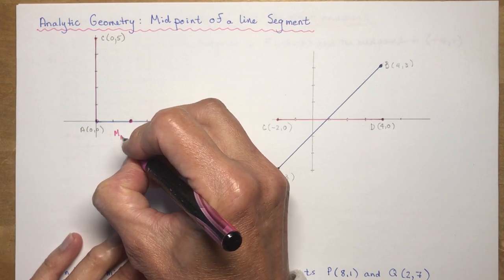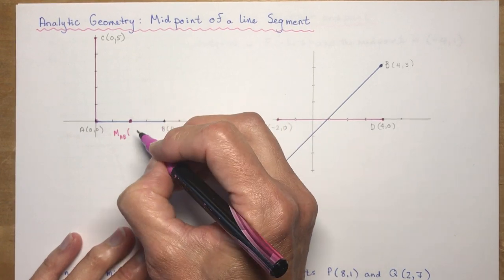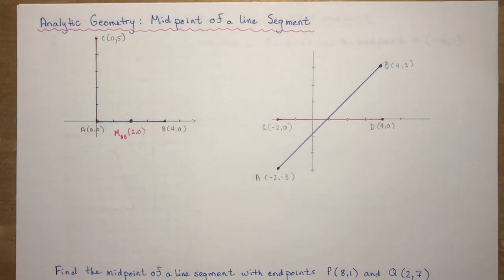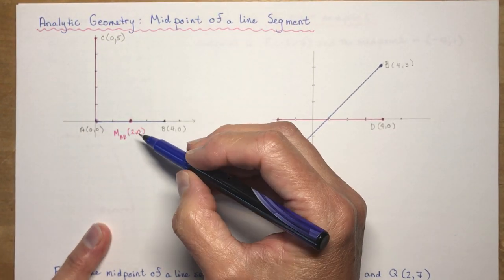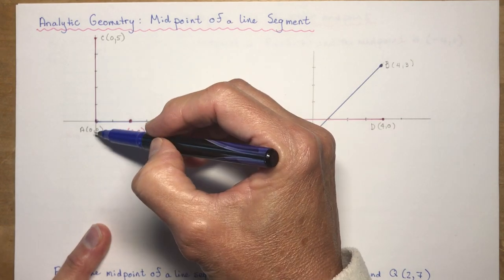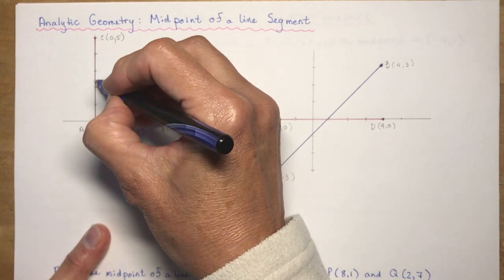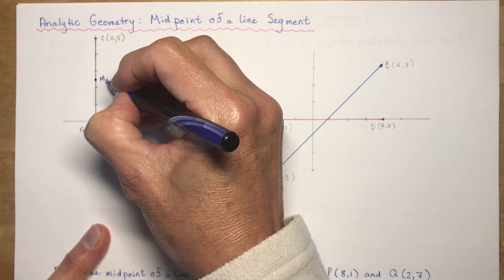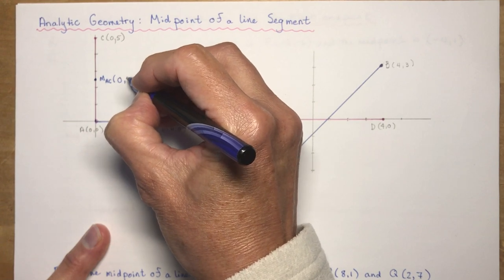We denote the midpoint with capital M, so midpoint AB equals (2, 0). Similarly, going up the y-axis with line segment AC, the midpoint of AC would be halfway between 0 and 5. Five divided by 2 is 2.5, so the midpoint of AC is x = 0, y = 2.5.